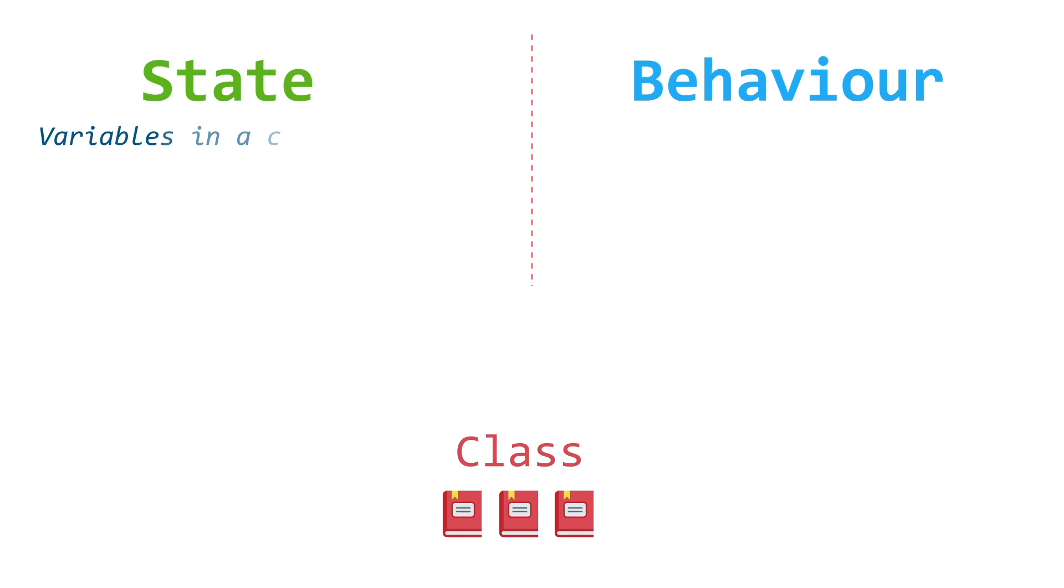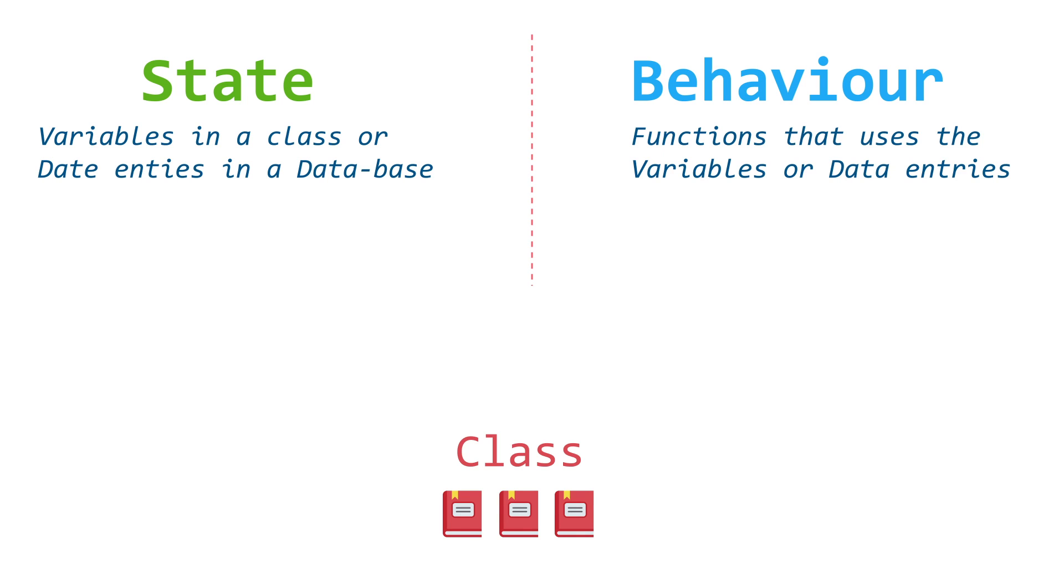Just note that state is the variables that you usually have in a class or the data entries that you have in a database. Behaviors are things that you do with it, which means that your class may check out a book in which case the state of the user will become book minus one, user.book equal to null because you have just returned the book.